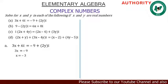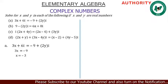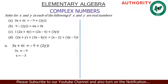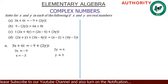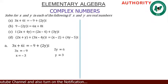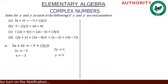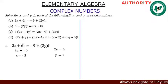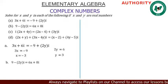Now comparing the imaginary parts: the imaginary part on the left is 6, and on the right is 2y. So 2y equals 6. Dividing both sides by 2 gives y equals 3. Therefore, for part a, x equals minus 3 and y equals 3.